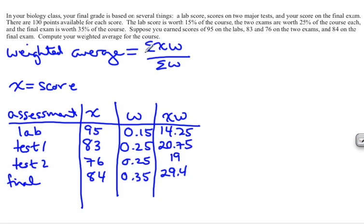As a reminder, this symbol here means to add them up. So now all you do is add up that column. So 14.25 plus 20.75 plus 19 plus 29.4, and that adds up to 83.4.